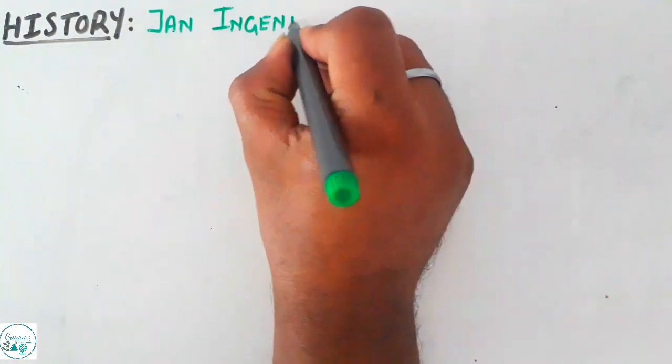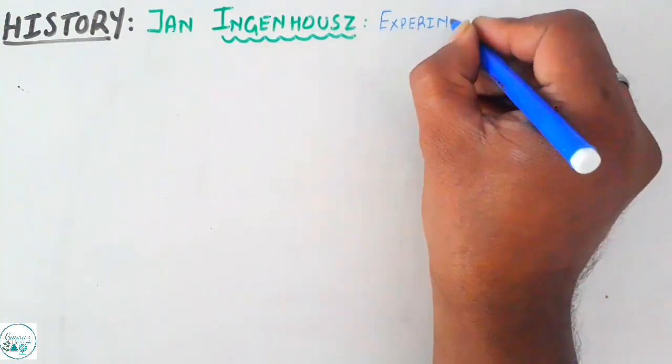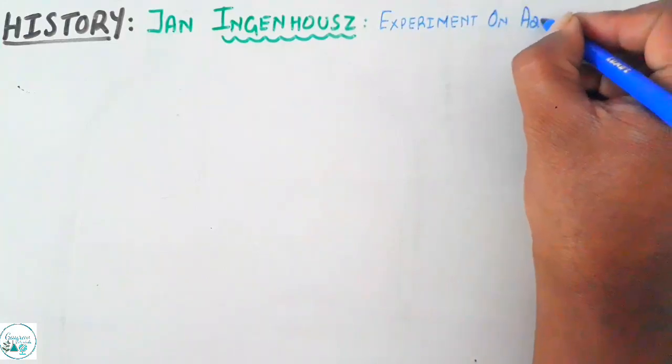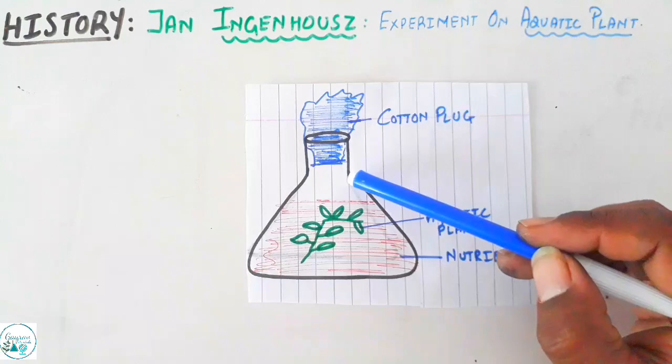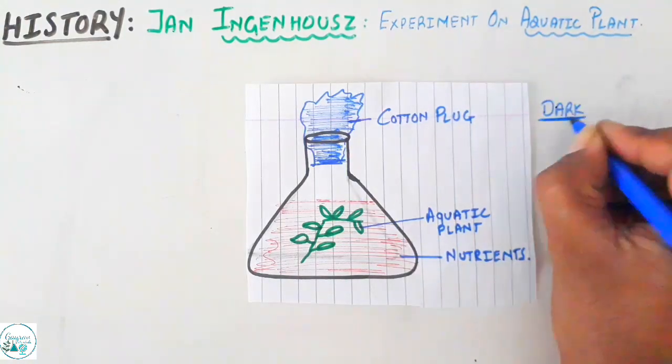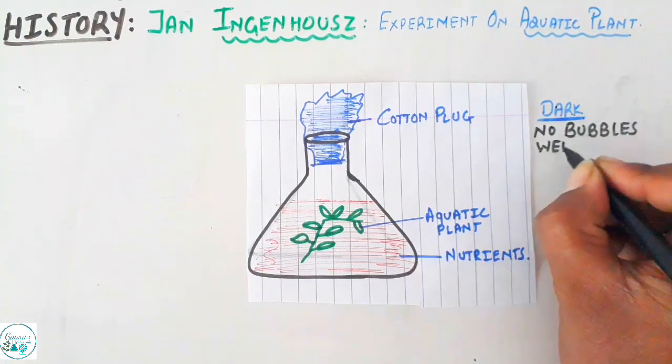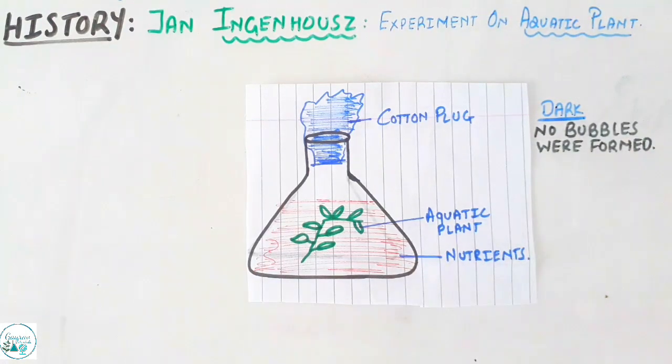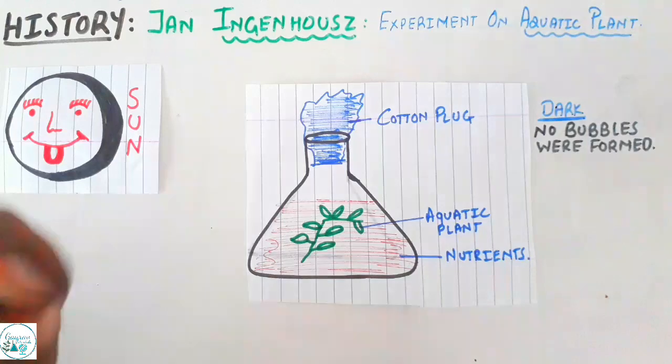The next scientist we are going to talk about is Jan Ingenhousz. His experiment was conducted on aquatic plants. What he did was he took a flask in which he put nutrients along with the aquatic plant and covered it with a cotton plug. It was found that during the dark no bubbles are produced around the leaves.